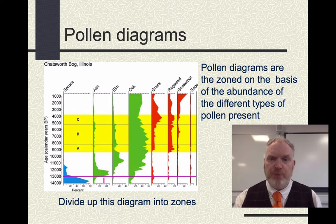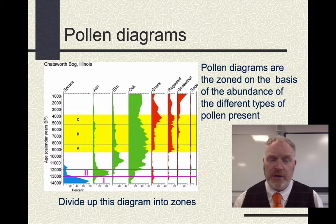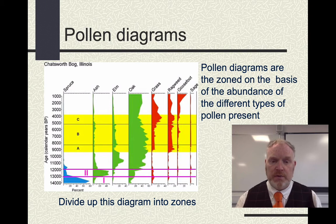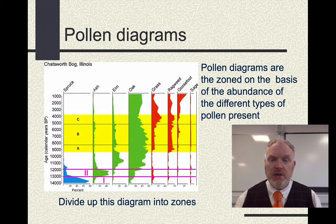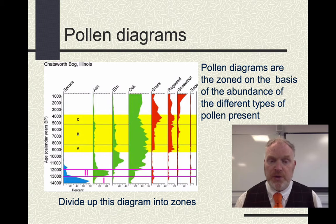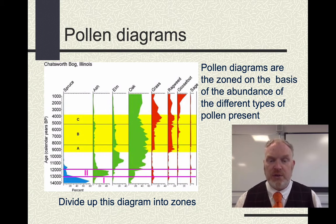That changes fairly abruptly at 13,000 years, for about another 1,000 years or so. I've put zone two up to about 12,000 years ago. Zone two is dominated by ash. The coniferous trees are much reduced at this point and they've been replaced by a broad-leafed deciduous tree — ash replacing them.